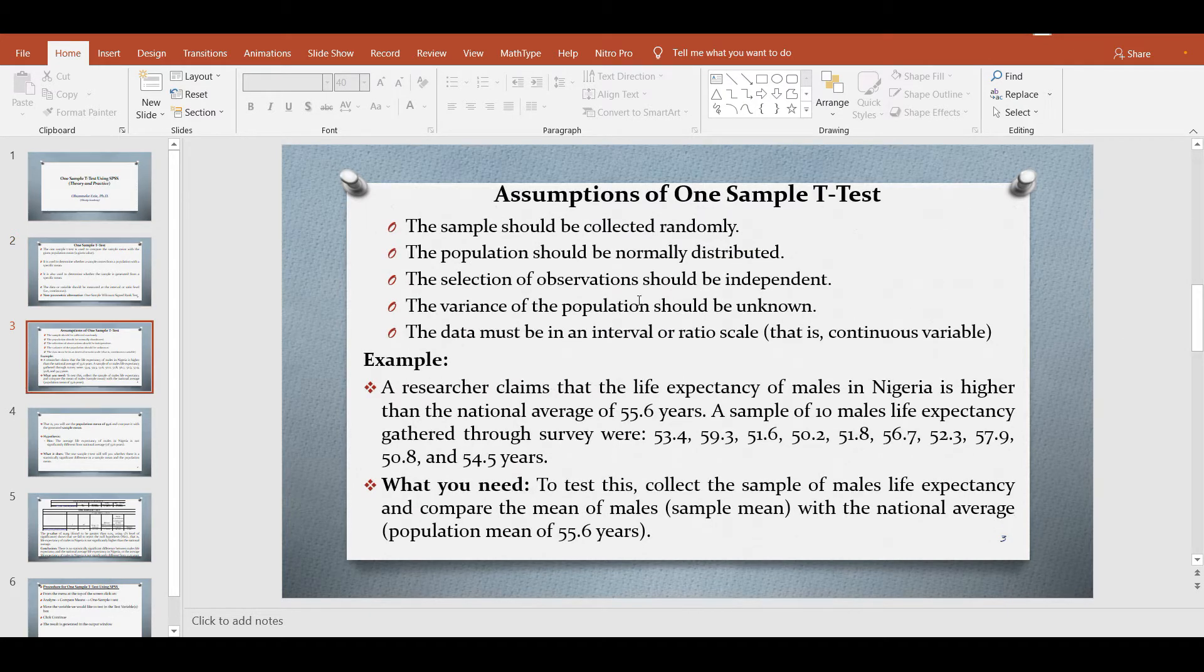Now what are the assumptions of one sample t-test? The sample should be collected randomly. The population should be normally distributed. The selection of observations should be independent. The variance of the population should be unknown. The data must be in an interval or ratio scale, that is it has to be a continuous variable.